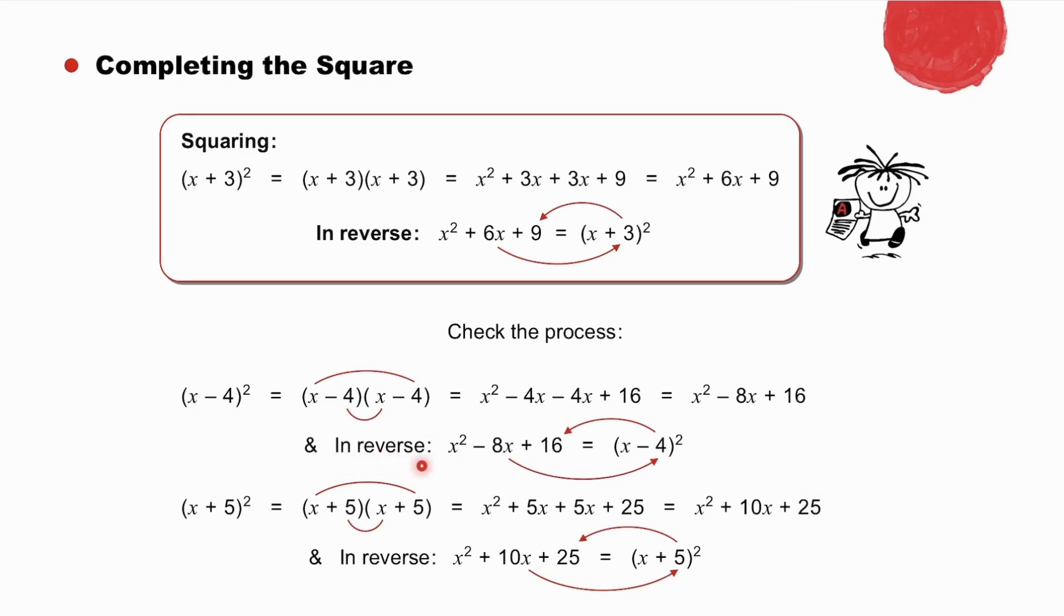So when we want to reverse the process, x² - 8x + 16, we halve 8, which is 4, and we square 4 to get 16. We halve 10, which is 5, and 5² equals 25.